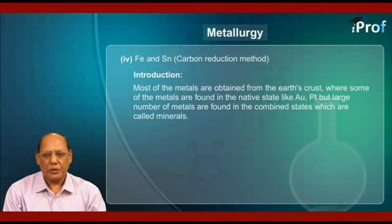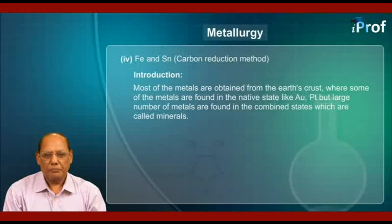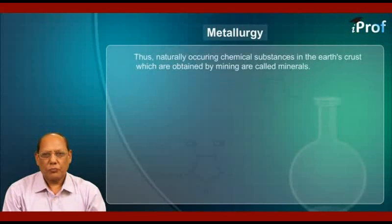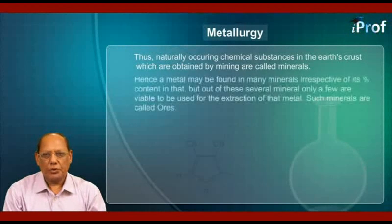Most of the metals are obtained from the earth's crust, where some of the metals are found in the native state, like gold and platinum. But a large number of metals are found in the combined state, which are called minerals. Thus, naturally occurring chemical substances in the earth's crust which are obtained by mining are called minerals. Hence, a metal may be found in many minerals, irrespective of its percent content in that.